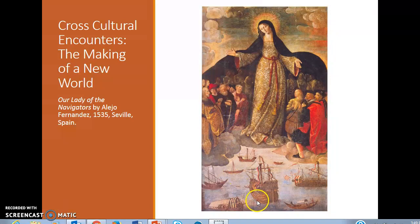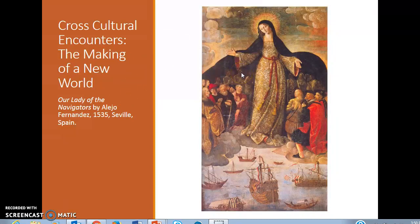At the bottom you have ships — the types of ships that would have brought Europeans to the Americas. Interestingly, in the background under the cloak, you can see Native Americans. This is one of the first depictions of Native Americans in European art. Notice how they're somewhat shrouded and obscured from view, and they're also included under the cloak of Mary, which is consistent with Europeans' efforts to convert Native Americans to Christianity.